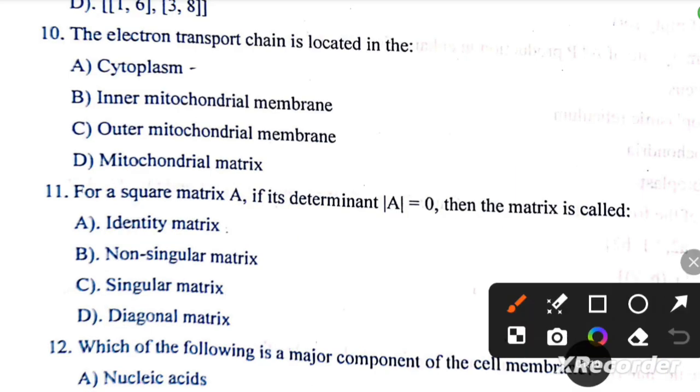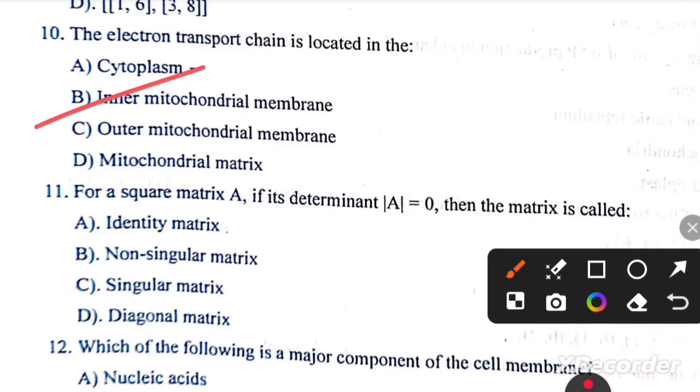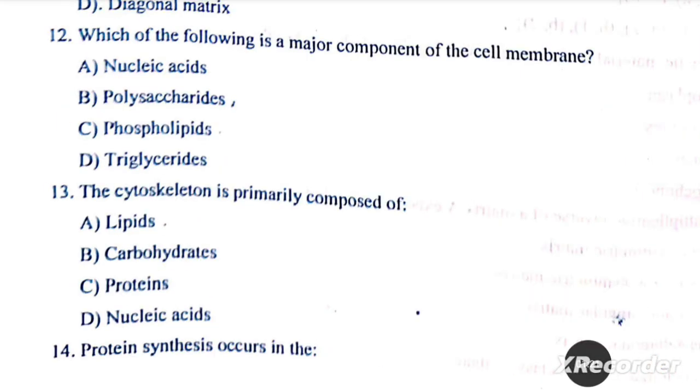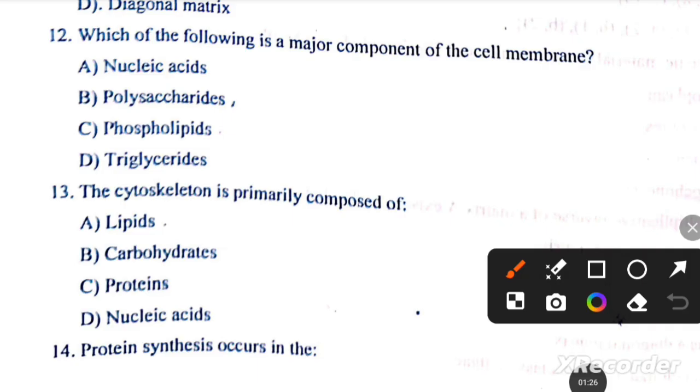The electron transport chain is located in the inner mitochondrial membrane. For a square matrix A, if its determinant is equal to 0, then the matrix is called a singular matrix. Which of the following is a major component of the cell membrane? The answer is C. The cytoskeleton is primarily composed of proteins.